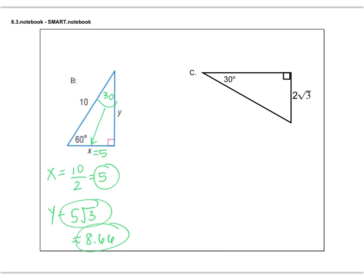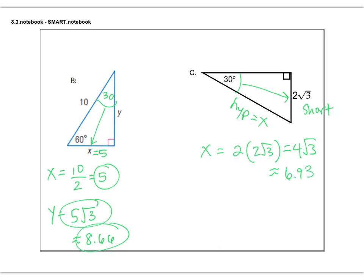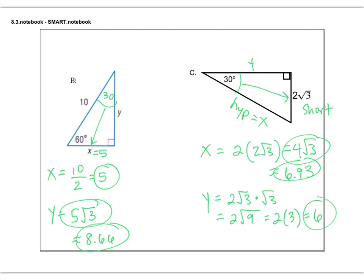And last but not least, let's do part C. Here we have another 30-60-90 triangle. This is our short leg. To get the hypotenuse — let's call it X — we just double the short leg. So we're going to double the 2 root 3, giving us 4 root 3 as the exact answer, or approximately 6.93. So that's the hypotenuse. And let's call this long leg Y. To get the long leg, we take that 2 root 3 short leg and multiply by root 3. Root 3 times root 3 is root 9, or just 3. And 2 times 3 is 6. There we have it.